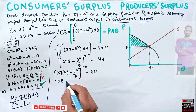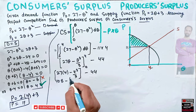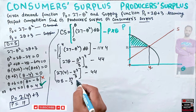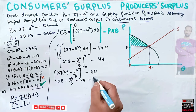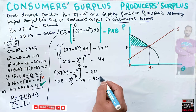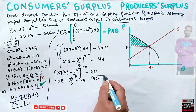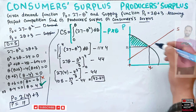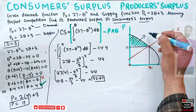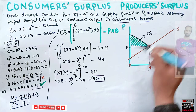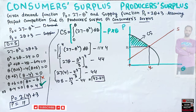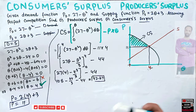The area of this triangle — our consumer surplus — comes out to be 42.67.